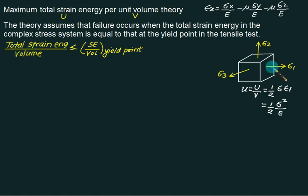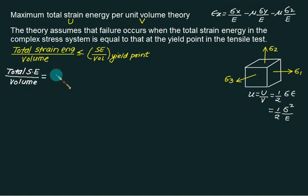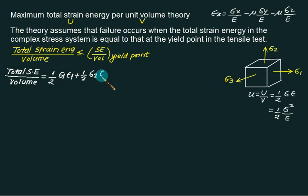The total strain energy is the sum of contributions from all three directions: U/V = (1/2)(sigma 1 × epsilon 1) + (1/2)(sigma 2 × epsilon 2) + (1/2)(sigma 3 × epsilon 3), where the factor 1/2 is common to all terms.